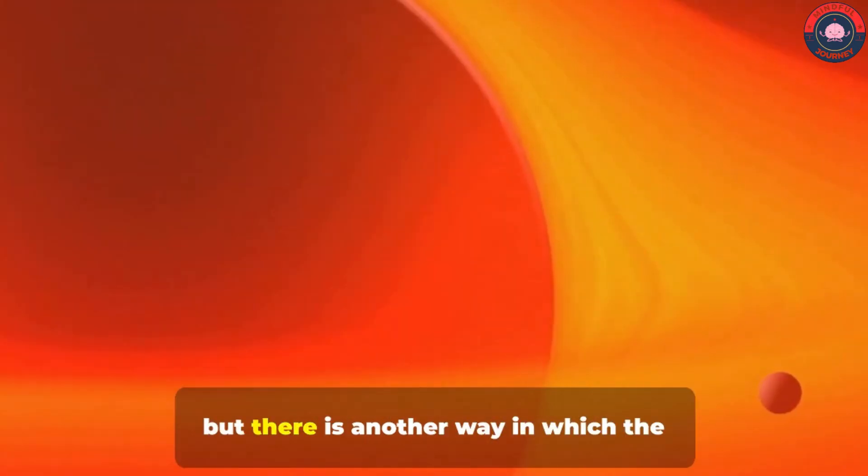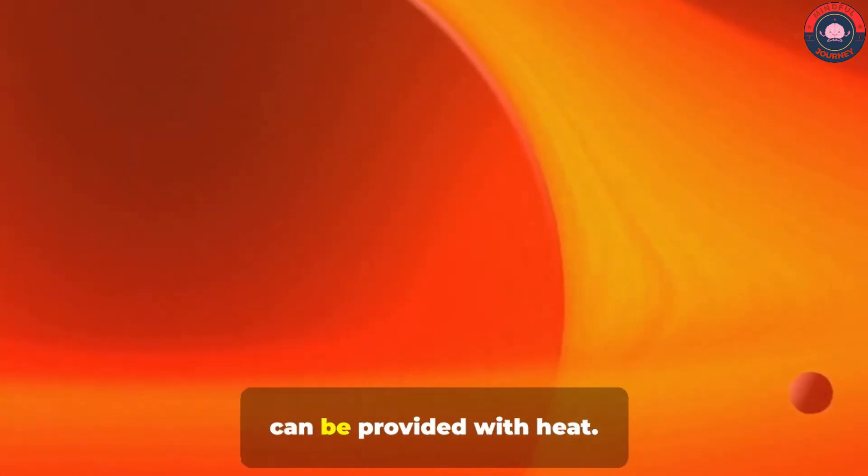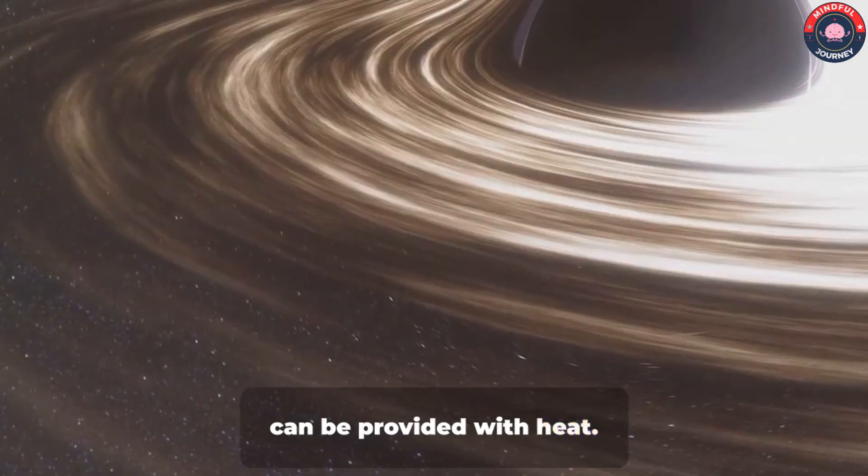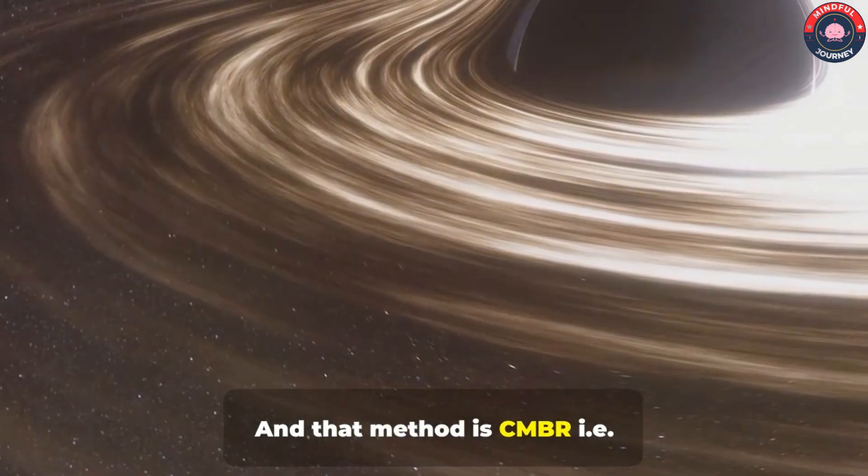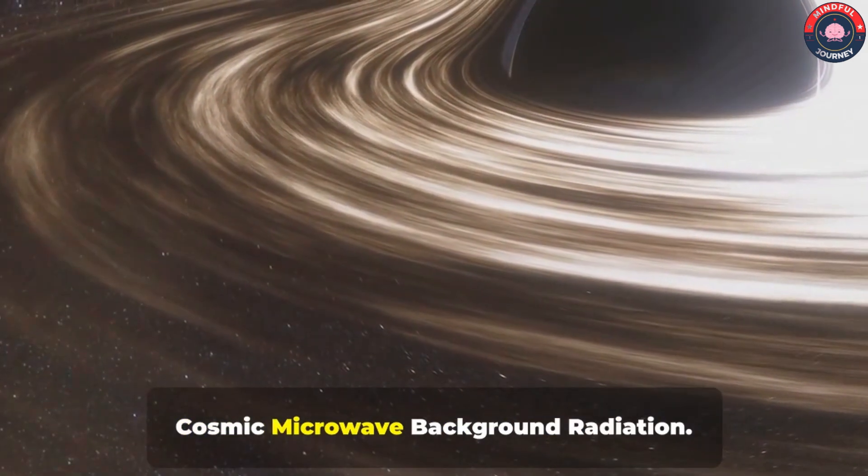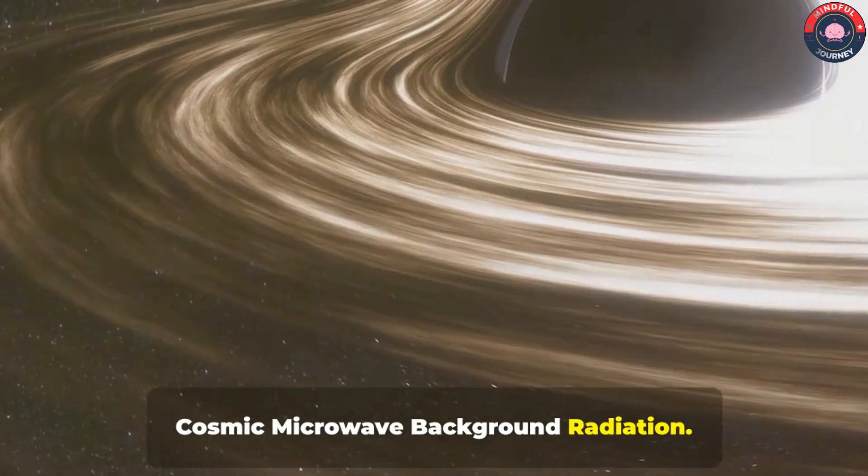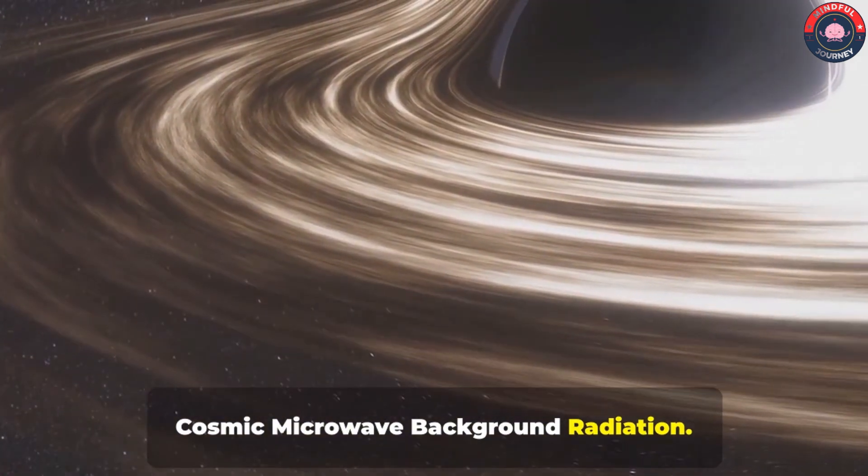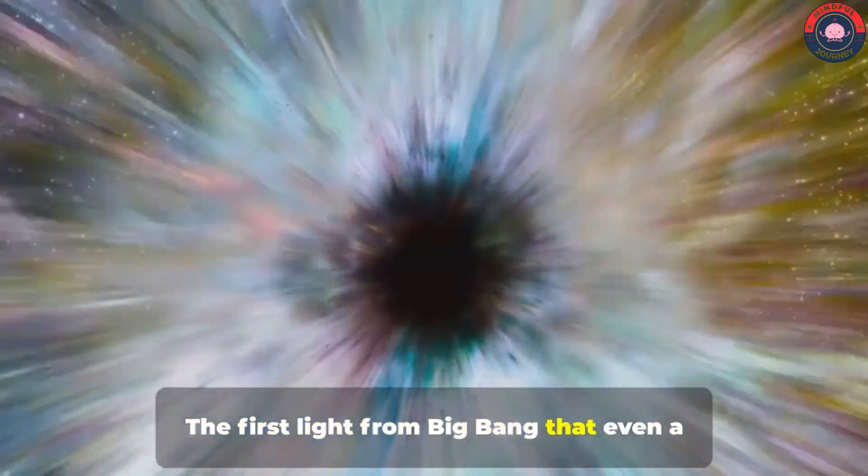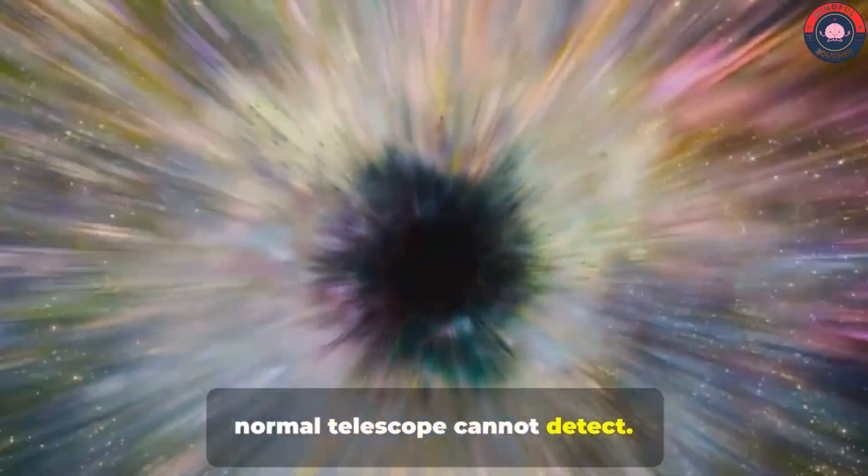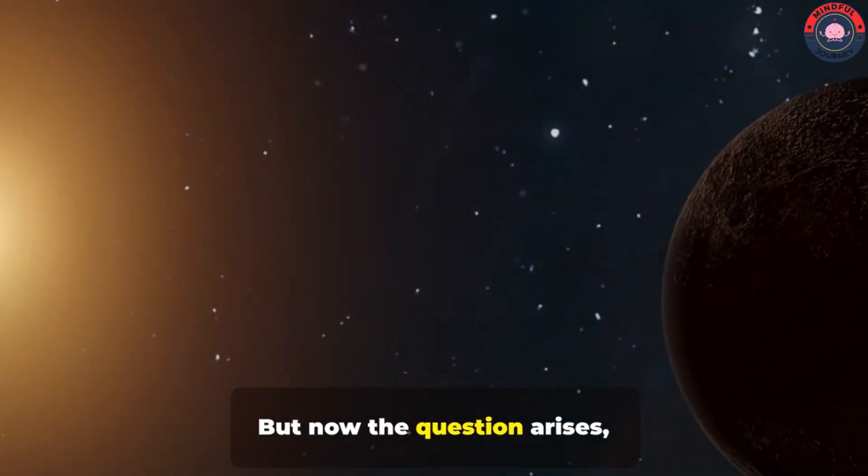But this is one way. But there is another way in which the planets revolving around the black hole can be provided with heat. And that method is CMBR, Cosmic Microwave Background Radiation. The first light from Big Bang that even a normal telescope cannot detect.